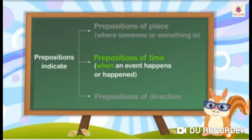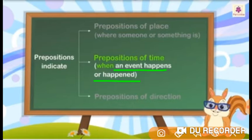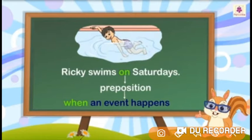Sometimes the prepositions indicate when an event happens or happened. Such prepositions are called prepositions of time. For example, Ricky swims on Saturdays. Here, the preposition on indicates when an event happens.